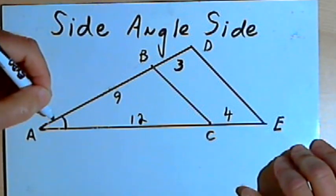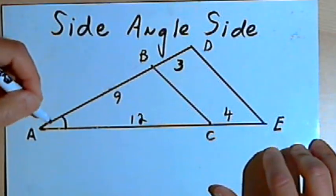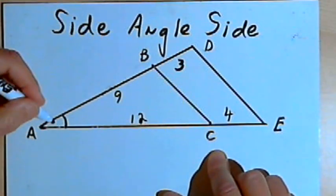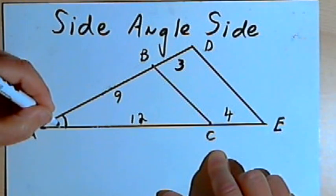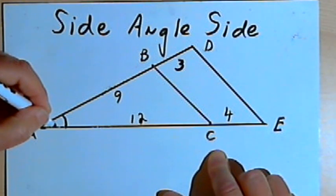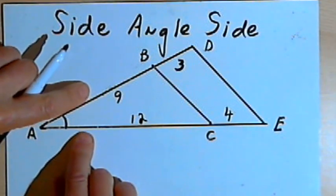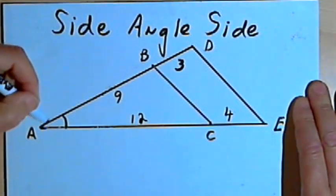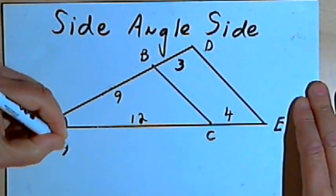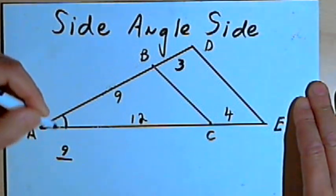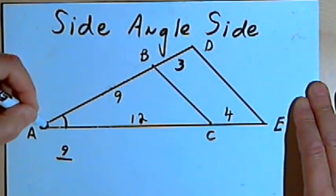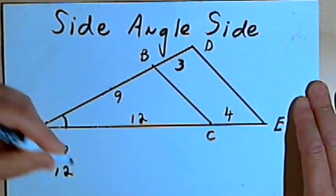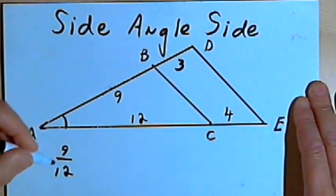Here I have two triangles: triangle ADE, and inside triangle ADE, triangle ABC. Both triangles share angle A, so angle A is congruent with angle A. Now I have to see if the sides on both sides of angle A are proportional. Side AB has length 9, and its corresponding side AD has length 9 plus 3, so the ratio of AB to AD is 9 over 12.